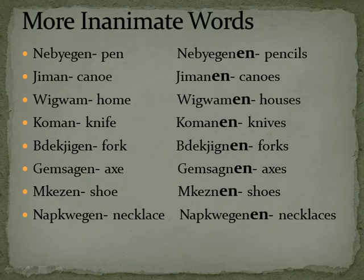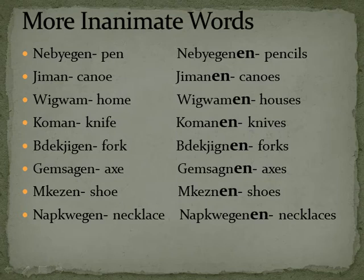Some more inanimate words: Nebiegen, a pin — Nebiegenen, pins. Jiman, canoe — Jimanen, canoes. Wigwam, home — Wigwaman, homes. Coman, knife — Comanen, knives. Bedakjigan, fork — Bedakjigan (plural), forks. Gumsagan, axe — Gumsaganen, axes.